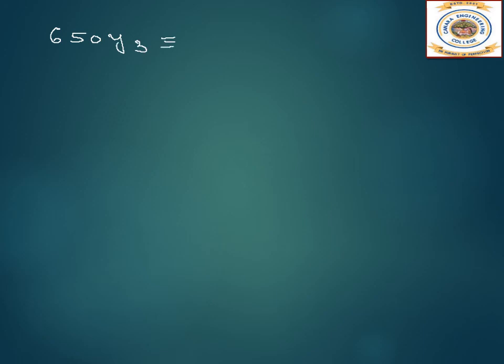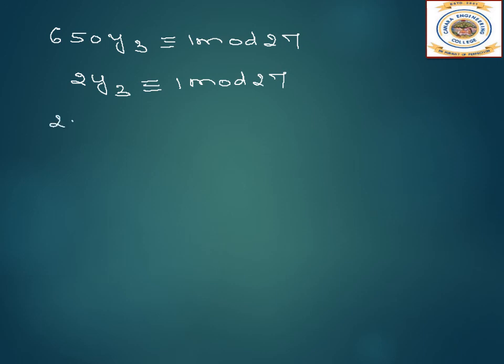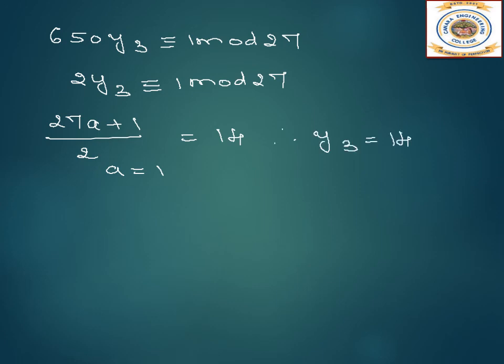Next we calculate y3. Capital M3 is 650, and y3 ≡ 1 mod 27. Since 650 is greater than 27, we do 650 mod 27, which gives 2. So 2·y3 ≡ 1 mod 27. Writing (27a + 1) / 2, when a equals 1 we get 14. Therefore y3 equals 14.